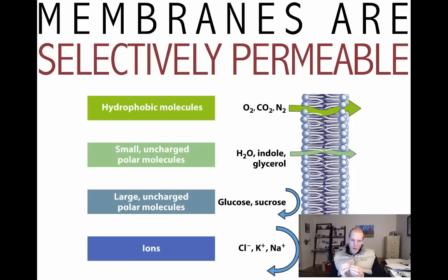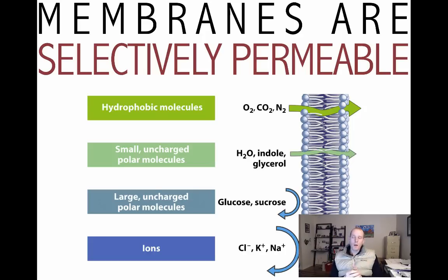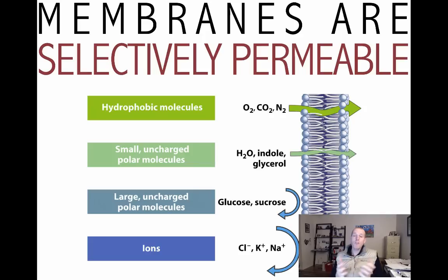Now let's go to large uncharged polar molecules. Sugars, for example — simple carbohydrates like glucose and sucrose — have a much much lower probability of crossing the membrane. And then if we go up to ions, which are very very small — smaller than sugars — things like chlorine, potassium, and sodium, they are unified by having a charge, a complete charge.